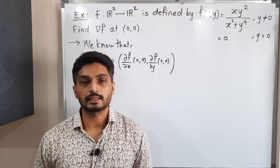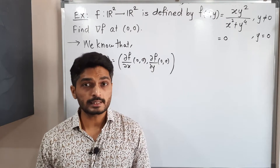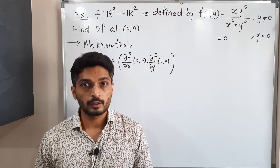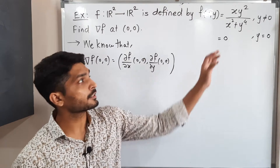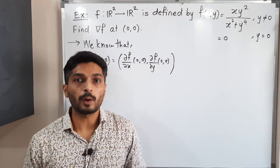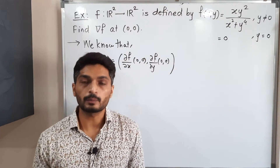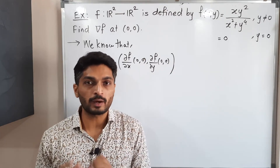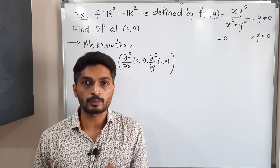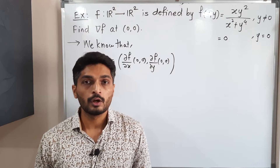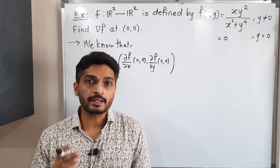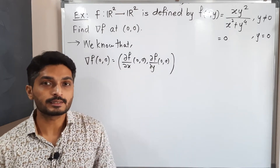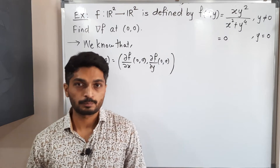Let us discuss this example. We have a function f defined in this way: if y is not equal to 0 it has some definition, and if y is equal to 0 its value is 0. We have to find the gradient of f, that means ∇f, at the point (0, 0).